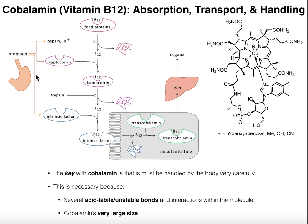The stomach is also going to secrete a protein called intrinsic factor. The chyme in the stomach, which contains B12 bound to haptocorin, is going to go into the small intestine. There are going to be more intestinal enzymes there, particularly in the duodenum. One of those enzymes, released by the pancreas's exocrine glands, is trypsin — an enzyme very similar to pepsin that degrades proteins. Trypsin will actually degrade the haptocorin.